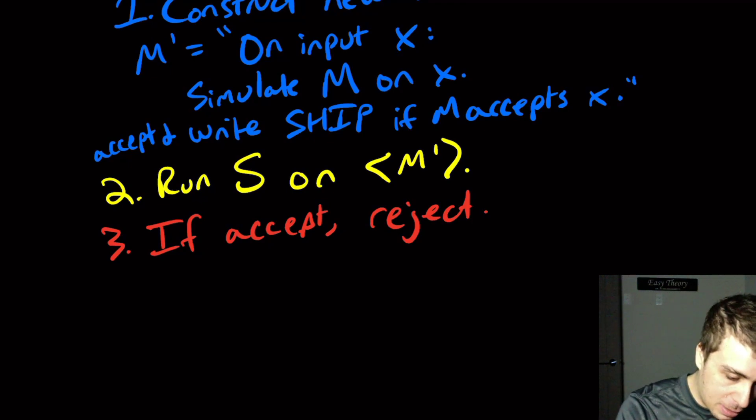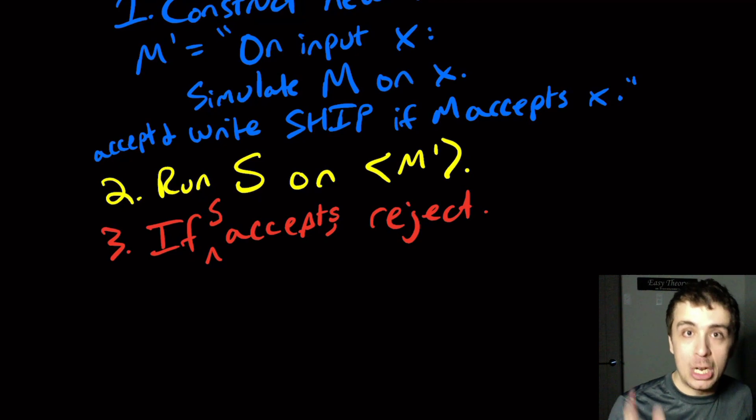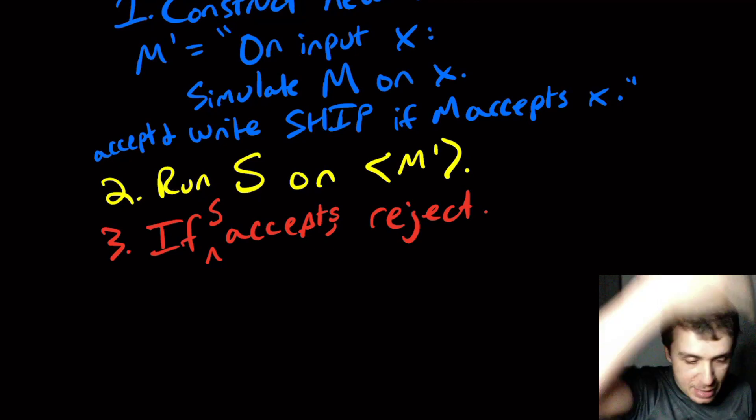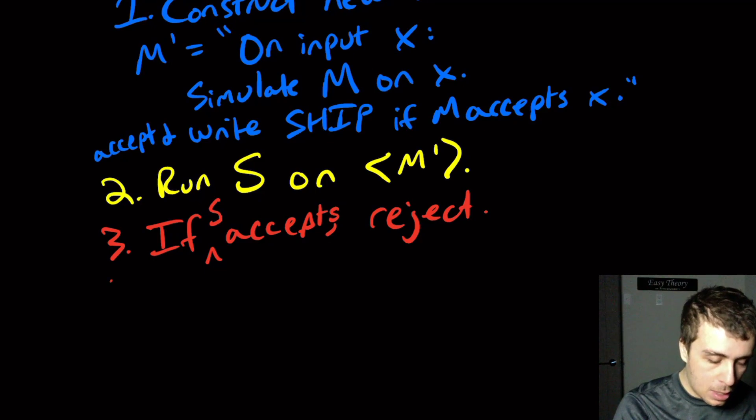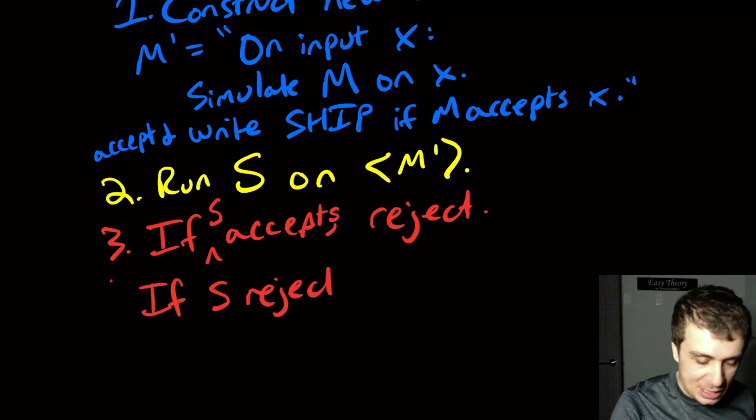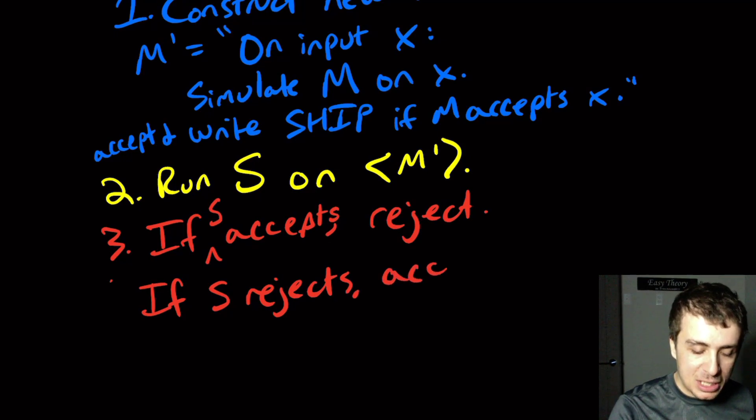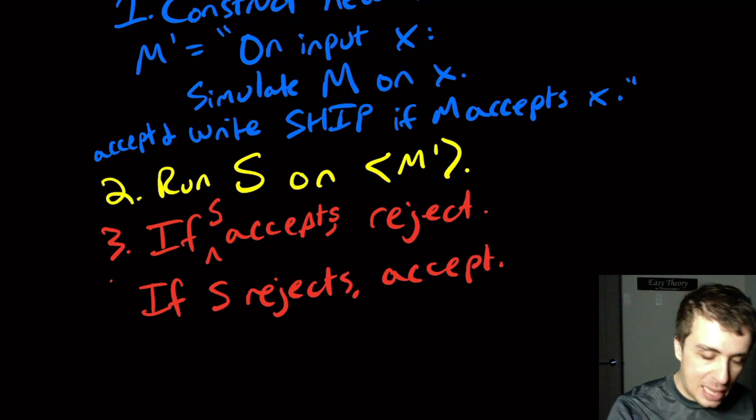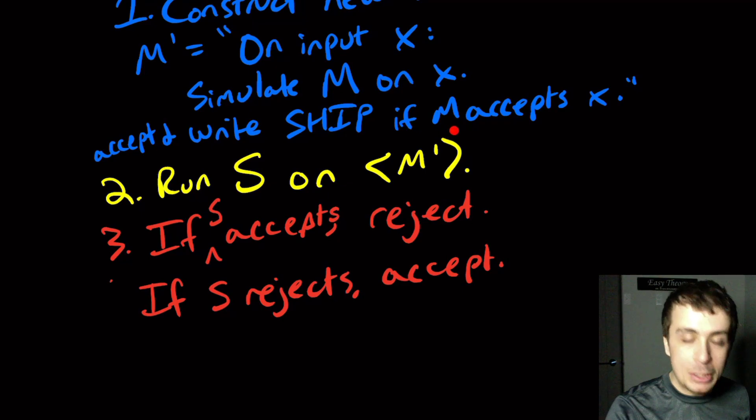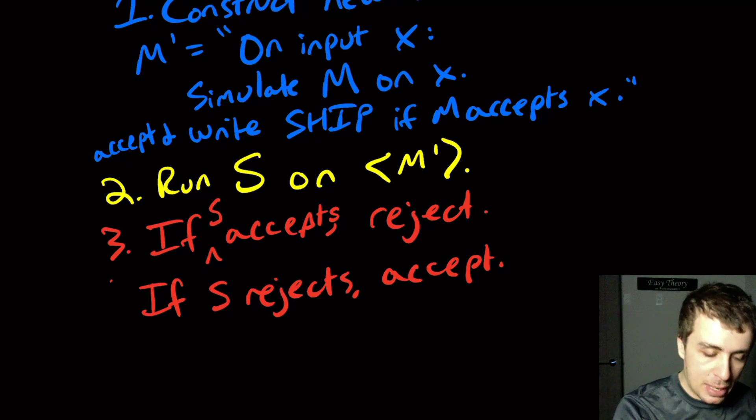So if S accepts, then we reject the machine that we're building here, the outer machine that we're building. If S rejects, because that's the only other possibility, then we will accept for the reason that if it rejects, it never wrote the word ship, which means that the original machine never accepted anything, which means its language was empty and therefore we can reject.